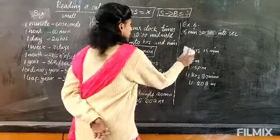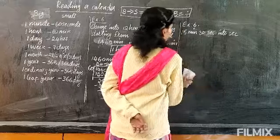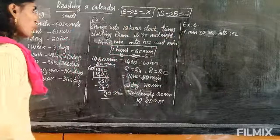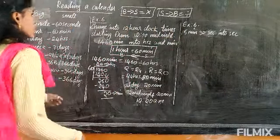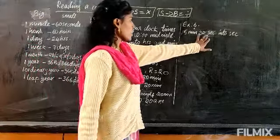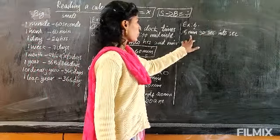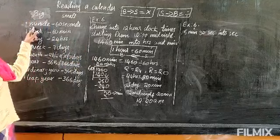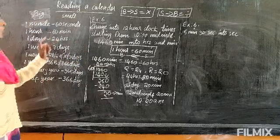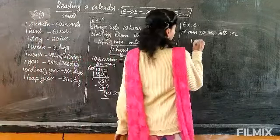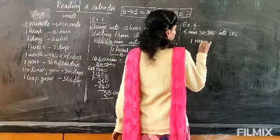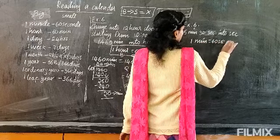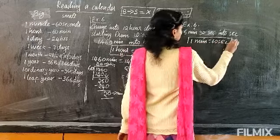Now let's do the next sum: 15 minutes 30 seconds into seconds. So we are converting minutes into seconds. The formula is: 1 minute equals 60 seconds.